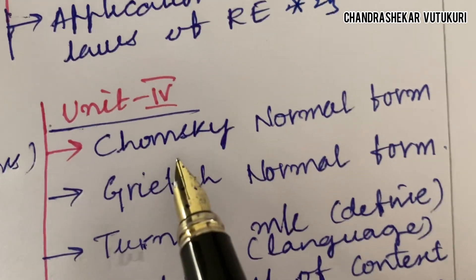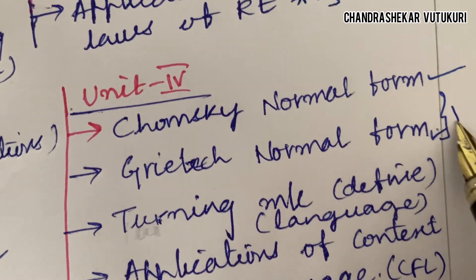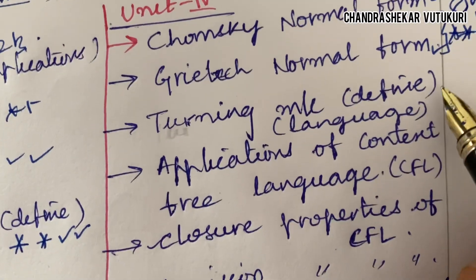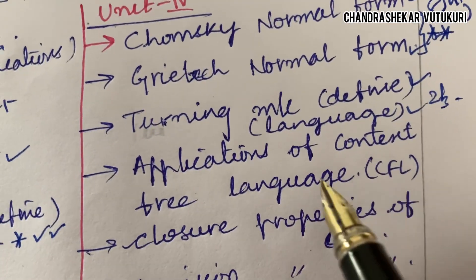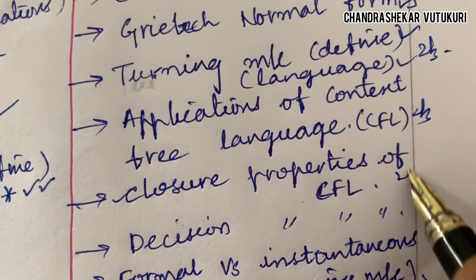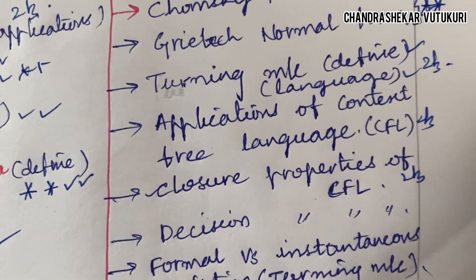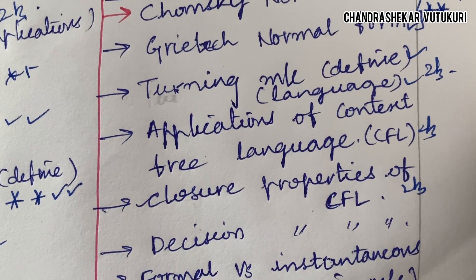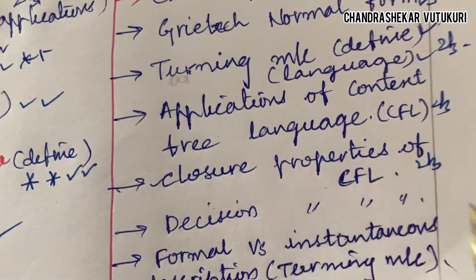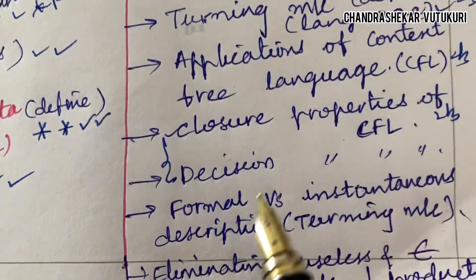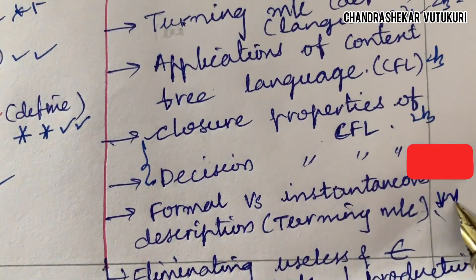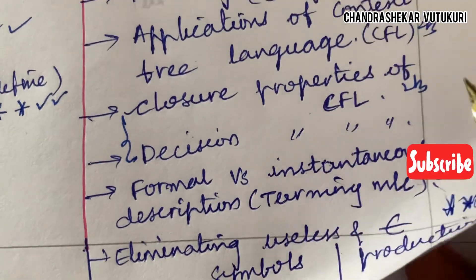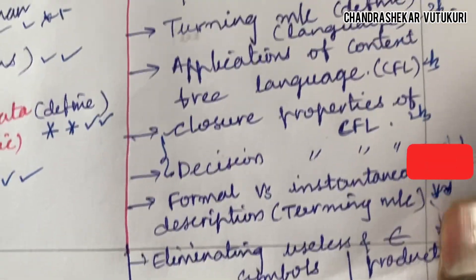Unit 4 covers CNF (Chomsky Normal Form) as well as GNF (Greibach Normal Form) — problems related to these are topmost questions, and differences may be asked in short questions. That may be Q8A and Q8B. Turing machine — define the term — and Turing machine language may be a 2 or 3 mark question. Applications of context-free languages and closure properties of CFL may also be short questions. You are not supposed to skip any part — work out everything to score full marks. Decision properties of CFL, or the differences between decision properties and closure properties, may be a difference-type question. Formal versus instantaneous description, Turing machine problems, eliminating useless symbols, and eliminating epsilon productions are important topics — possibly Q9AB or just Q9.